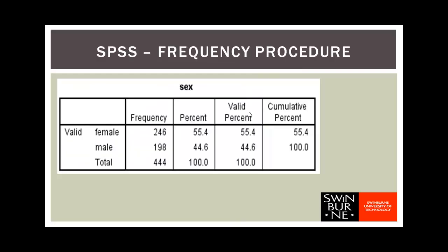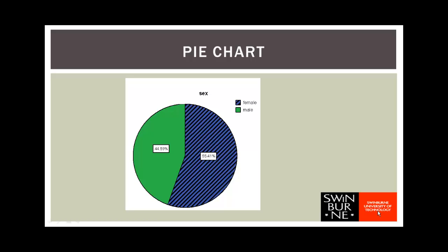We might look at how each variable is distributed. Looking at the frequency table for sex produced by SPSS, there were 444 people in our sample. Of those 444, 246 were female — taking 246 divided by 444 multiplied by 100 gives us 55.4% female, which is a reasonably even split. We can also get SPSS to produce a graph of this distribution. Here we've produced a pie chart, and you can see that the percentage of females is slightly greater than the percentage of males. Graphs are a really useful way of presenting data — they let you and your audience see at a glance exactly what the distribution looks like.